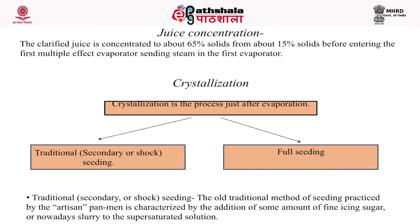Live steam enters the first evaporator; vapor from the first evaporation is fed to the second evaporator, and so on. Spent steam from the first evaporator is returned to the boiler for reuse as feed water for steam generation. Spent steam from the second and third evaporators is used for processing, and vapor from the last evaporator is condensed through a condenser.